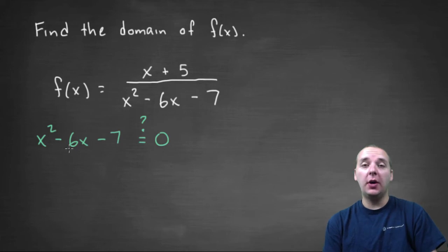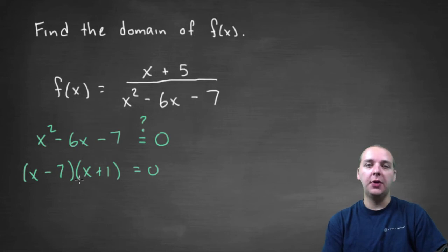So this is a quadratic, so it looks like it'll factor. I think this one would factor as x minus seven times x plus one, set that equal to zero. And as you know, when you have a quadratic that's factored and set equal to zero, then you can set each of these individual factors to zero.